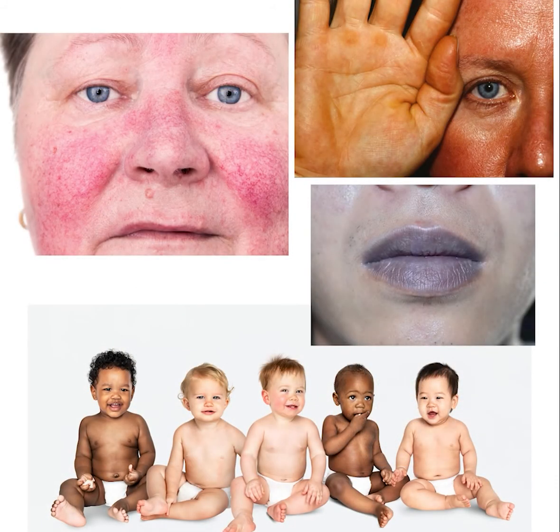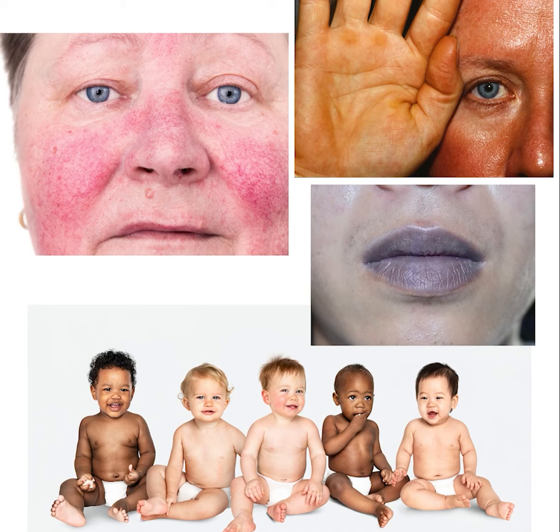Human skin exhibits only four colors: red, yellow, brown, and blue. Carotene accounts for the yellow color and is rich in foods like carrots. Oxygen-rich hemoglobin in the blood produces the red color, which you'll see in individuals with rosacea or visible circulatory issues. Oxygen-depleted hemoglobin produces more of a blue color — seen when a person lacks oxygen and their skin or lips turn blue. The brown color is, of course, due to the pigment melanin, which is the major factor in the color of our skin.